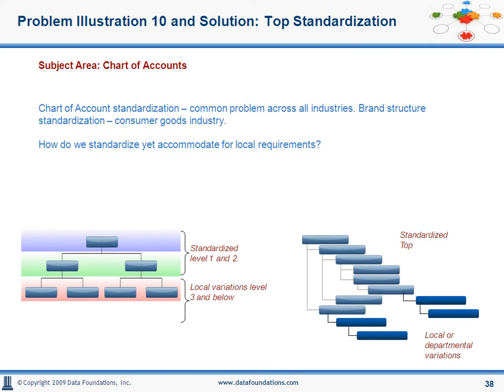Top standardization is a very common technique for recursive and network recursive hierarchies. In the leveled hierarchy below — our brand hierarchy example from earlier — where each level has a specific name and attributes, creating lower level categorizations for local or functional reporting while the top level remains the standard for global and strategic reporting is a much better option than the tree-to-tree mapping we had before. In recursive or network recursive hierarchies like chart of accounts, creating top level account structures that can be extended below for local or functional allocations is common as well.